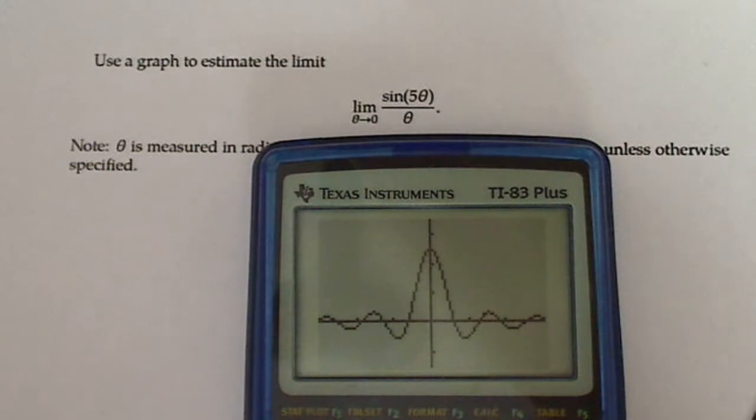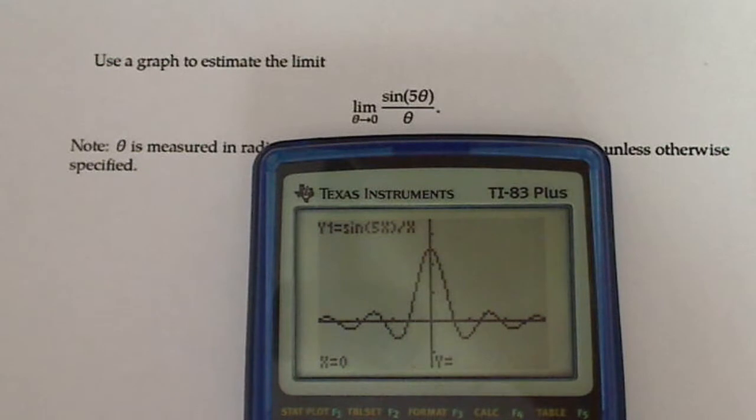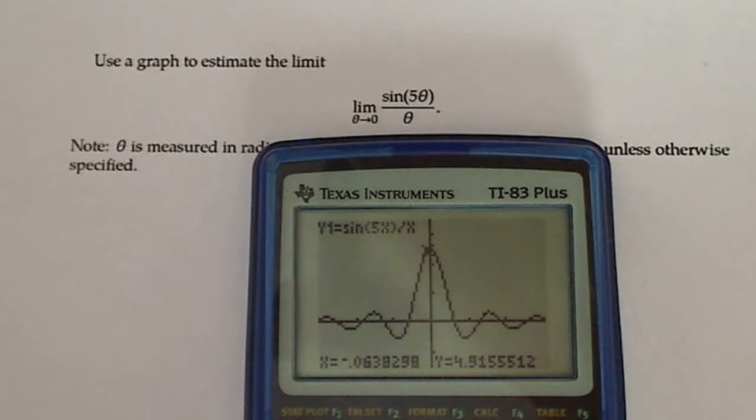So when I hit trace it goes right to the center of the screen. And notice at x equals zero y equals nothing. Right. Because we knew that already. So I'm going to tab just to the side and I see that when I'm really close to zero here I'm about at four point nine one. And when I tab this direction I'm at four point nine one or nine two. It looks like I'm very close to y equals five.